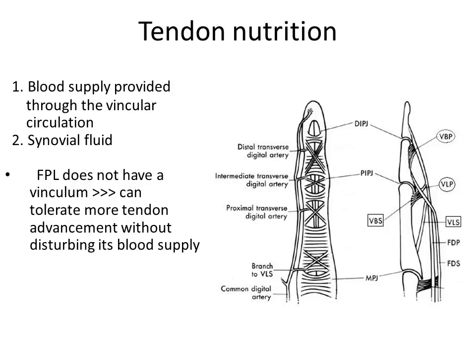The blood supply provides, through the vascular circulation, an intrinsic blood supply that runs longitudinally along the length of the tendon in a dorsal position, providing intrinsic nutrition. However, the majority of the tendon is supplied by synovial fluid produced by the synovial sheath, and the blood supply to the synovial sheath helps produce fluid to allow nutrition to reach the tenocytes in the periphery of the flexor tendon's cross-section. The FPL does not have a vinculum and therefore tolerates more tendon advancement without disturbing its blood supply, due to its unique blood supply.